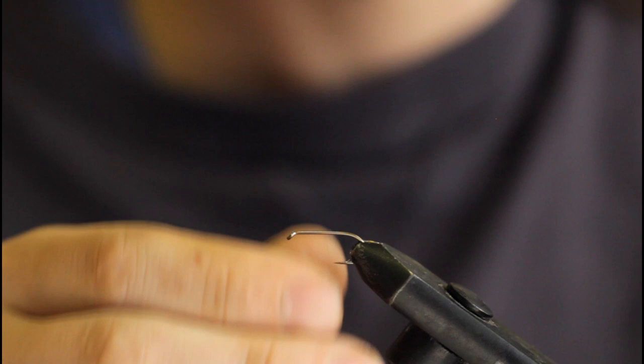Welcome back guys. Today I'm going to be tying up the red and white bucktail streamer. I'm going to start with a size 8 nymph wet hook in the vise.